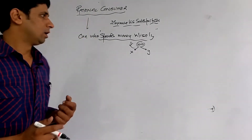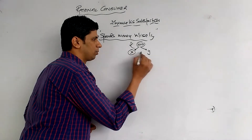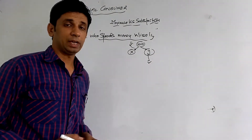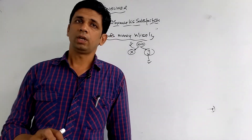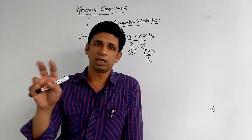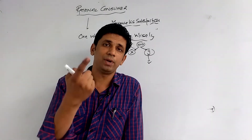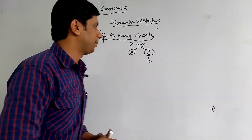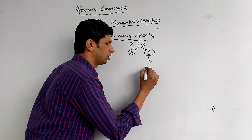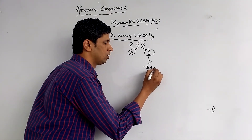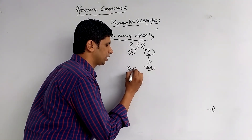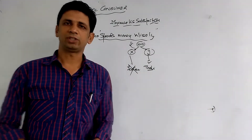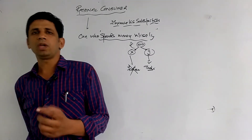For example, for product X and product Y, why does one product give more satisfaction? Satisfaction is purely a psychological concept and it depends on your requirements. If you are hungry and you get an ice cream for 100 rupees, then naturally you won't invest in it as a rational consumer.